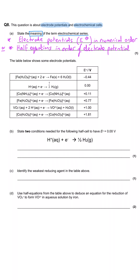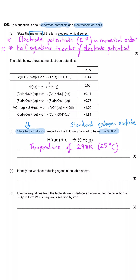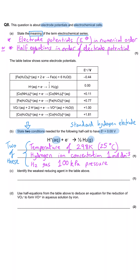Part B says: state two conditions needed for the following half equations to have an electrode potential of 0.0 volts. There's only one mark here, so we need both conditions for that mark. There are three standard conditions to remember. One is temperature: 298 Kelvin or 25°C. Another is concentration: the hydrogen ion concentration needs to be 1 mol dm⁻³. The final condition is pressure: the hydrogen gas pressure needs to be 100 kPa.